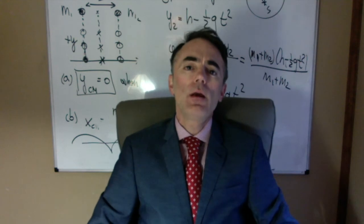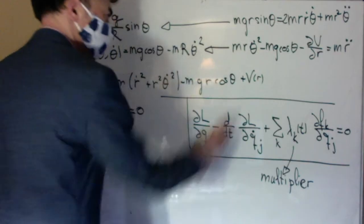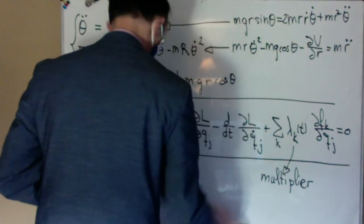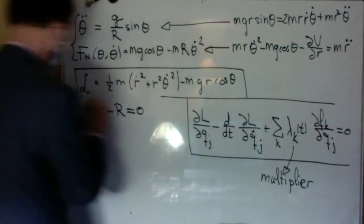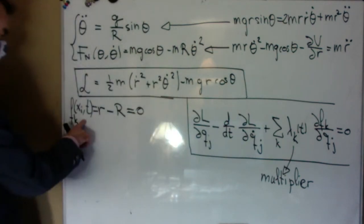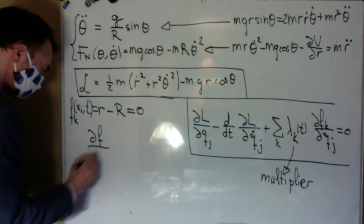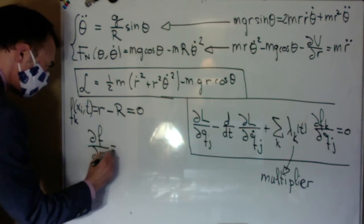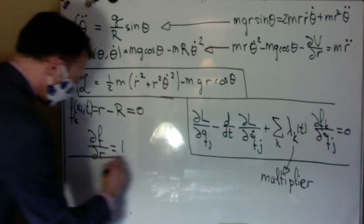Let's see this in the same problem. We already found the Lagrangian considering both r and theta. The constraint here is f equal to r minus capital R. Remember that the constraints are equal to zero. This constraint only depends on r, so we will only have the partial of f with respect to r, which is one.